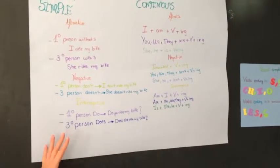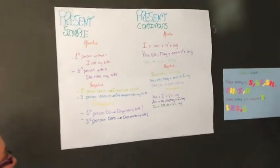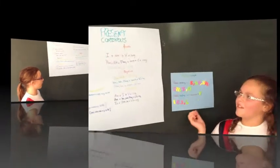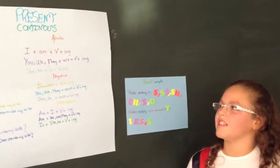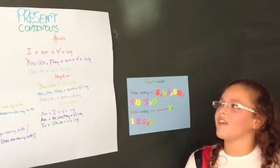Okay, the negative. For the first person — for example, Janet — it is: I don't write my book. The present continuous is...